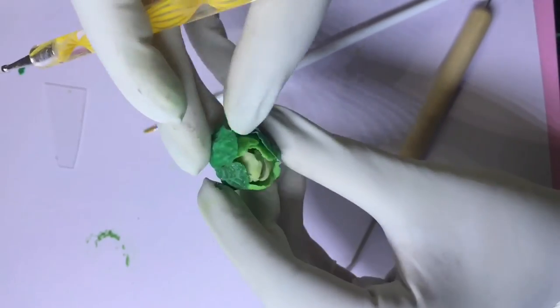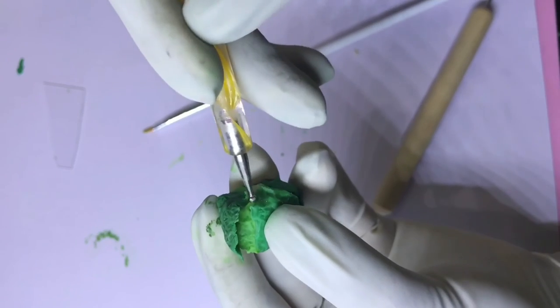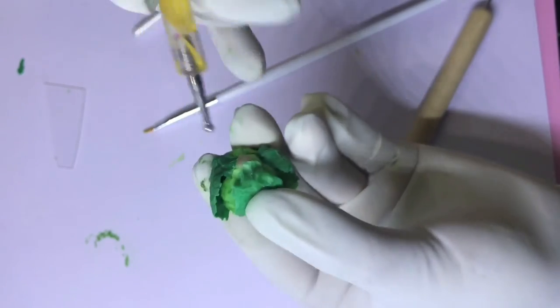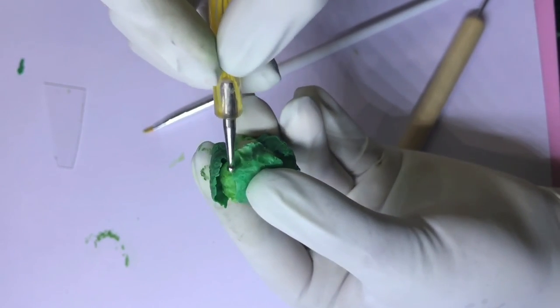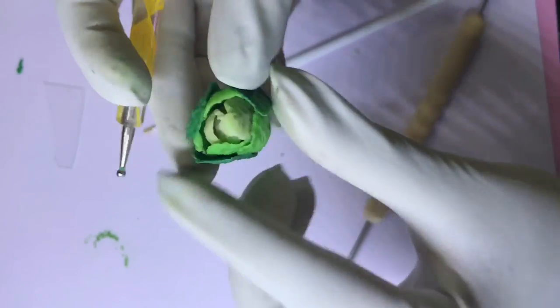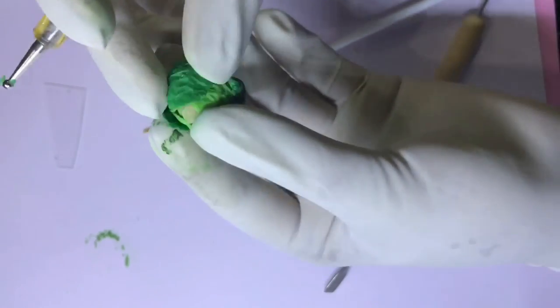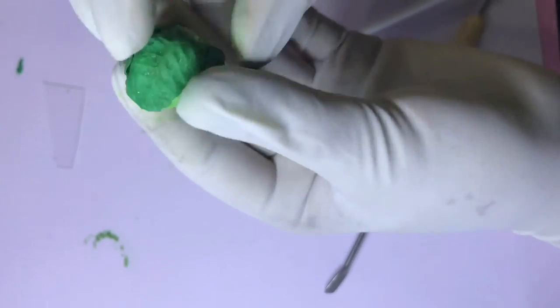Now our cabbage is also ready. I am just blending in the last one. Use this very gently - you do not want to break the whole cabbage. Blend the bottom nicely, and we are done.